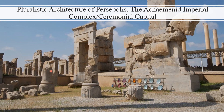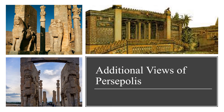Here are some more views of Persepolis' architecture. The capitals of these columns are very reminiscent of the capitals of Egyptian columns — they look a lot like papyrus. We can also see Mesopotamian-style statues with human heads placed on animal bodies.